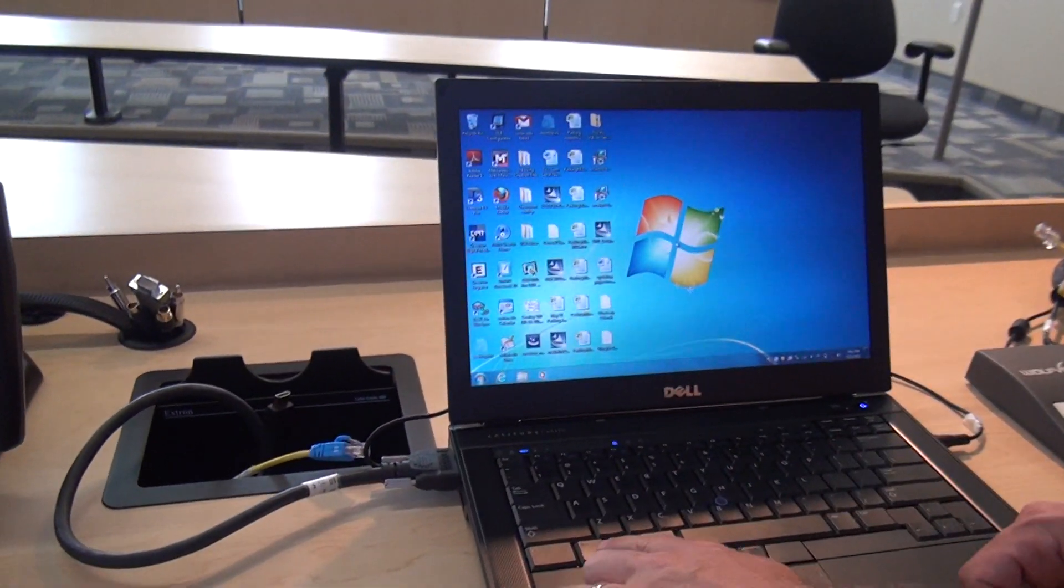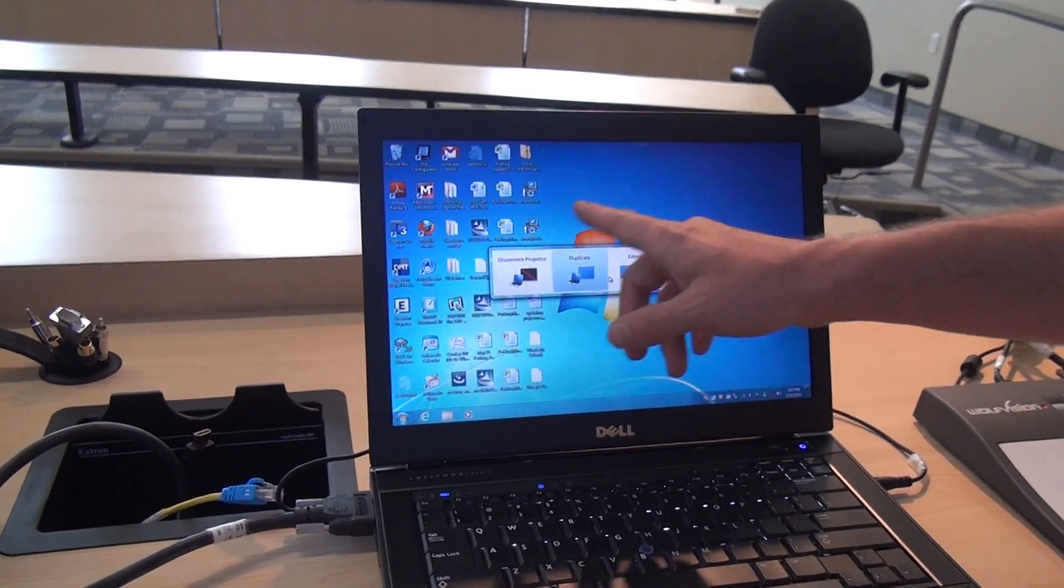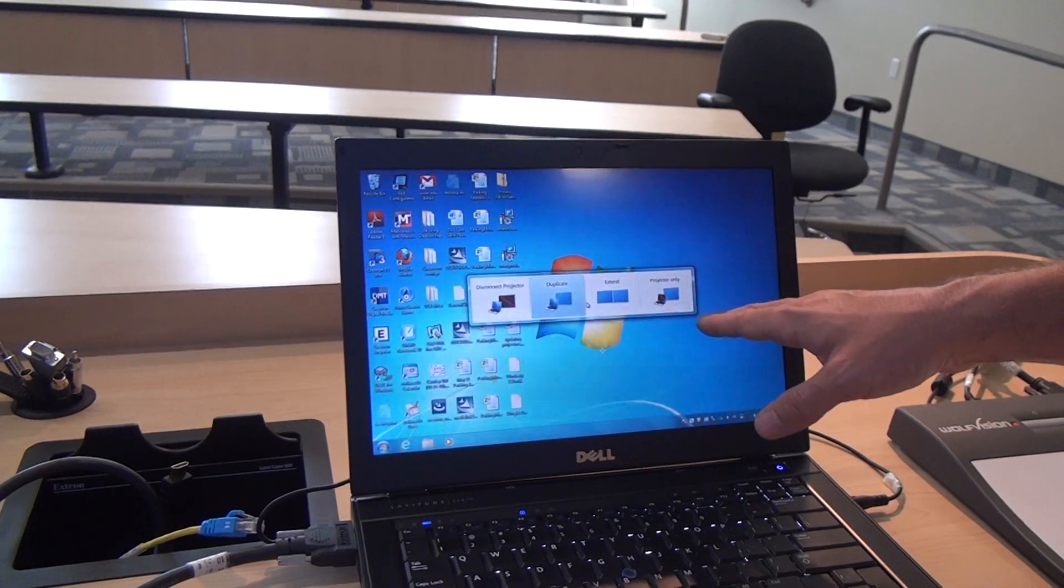Okay, if your laptop doesn't show up right away it's probably because you're not in the correct mode. You're going to want to change that in your control panel, or on a Windows machine you'll hold down the function key and you'll hit F8 and that'll give you a nice little menu or it'll scroll through these different options automatically.